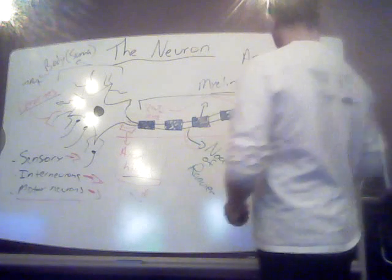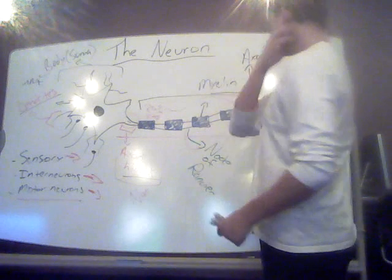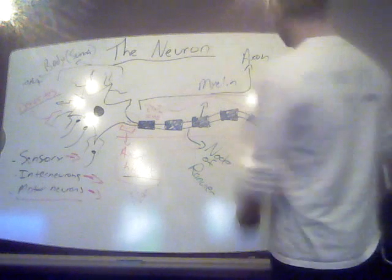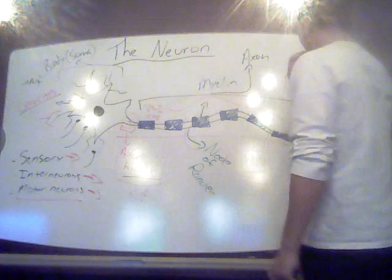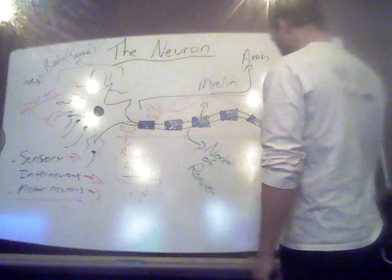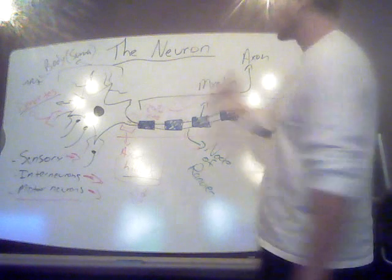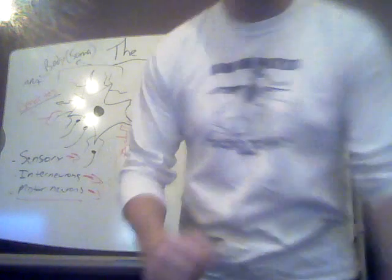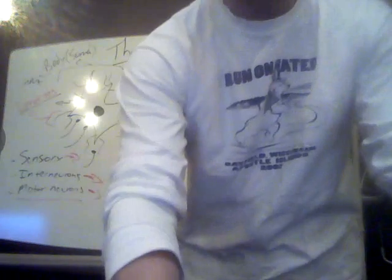Review these basic parts of the neuron. I went over this a little quickly but I've got time limits to work with. Keep these in mind when we're going over the action potential.